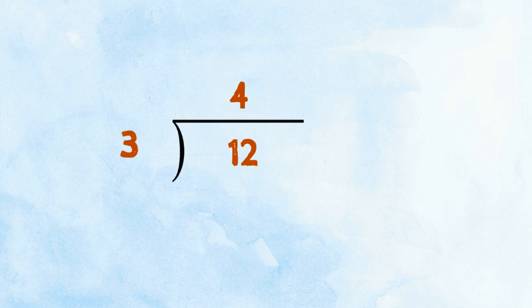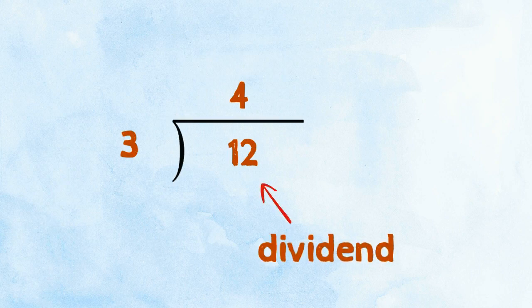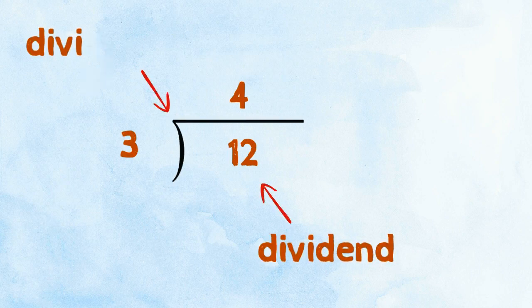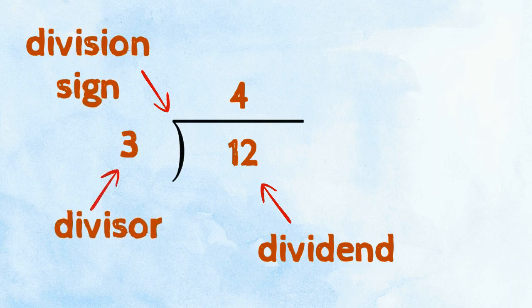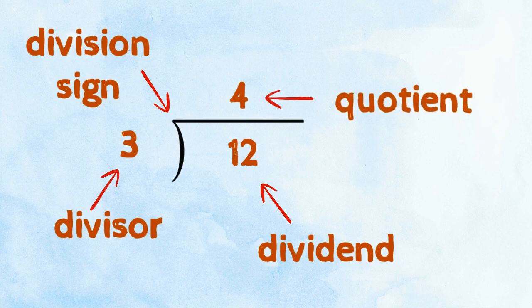This new division sign has exactly the same parts as the other division symbol. For example, 12 divided by 3 equals 4. So we have the division sign, 12 which is the dividend, 3 which is the divisor, and 4 which is the quotient.